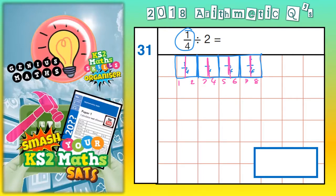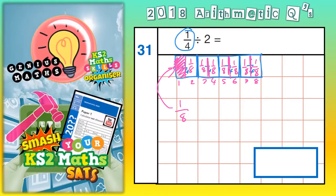Therefore, each new piece, once a quarter has been divided by two, is actually one out of eight pieces — one-eighth. So this piece I've shaded is one-eighth, and each of the remaining pieces becomes one-eighth. So your final answer: a quarter divided by two is one-eighth.